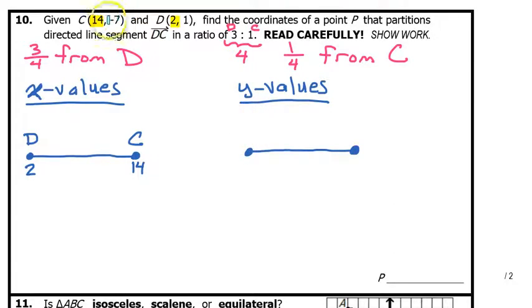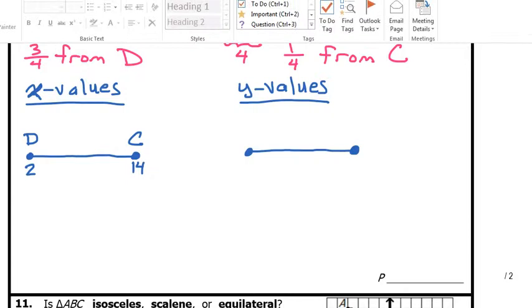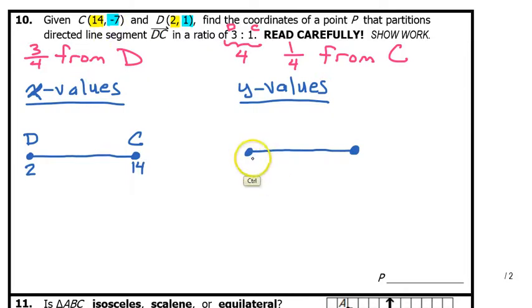Now, as I look at my Y values, negative 7 and 1. Negative 7 is smaller than 1. So, I'll put negative 7 on the left-hand side. But, negative 7 comes from point C, and the 1 comes from point D.